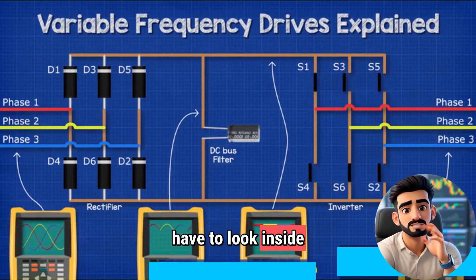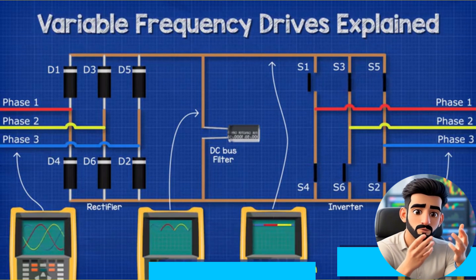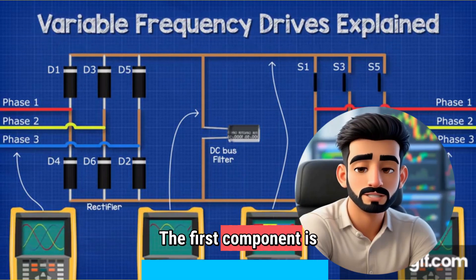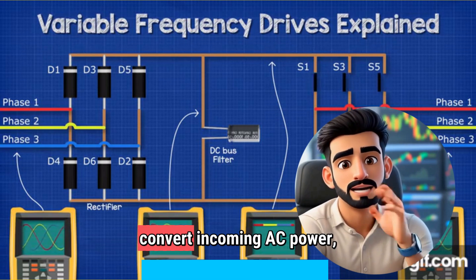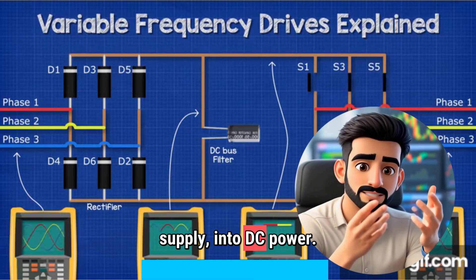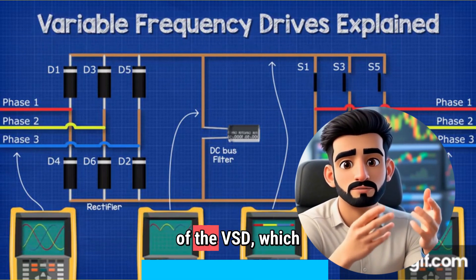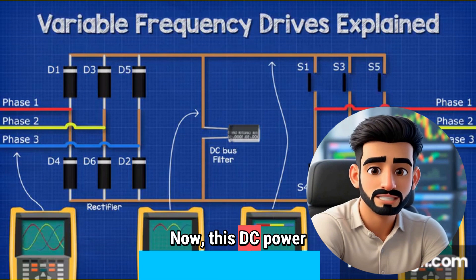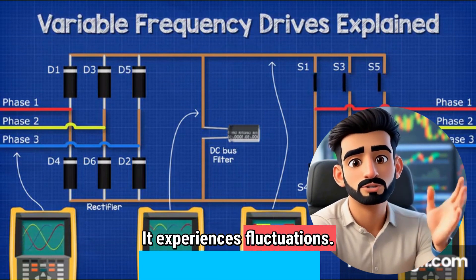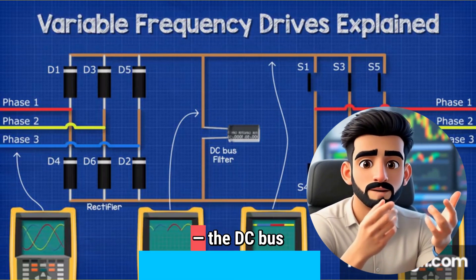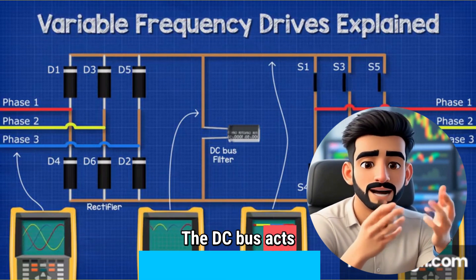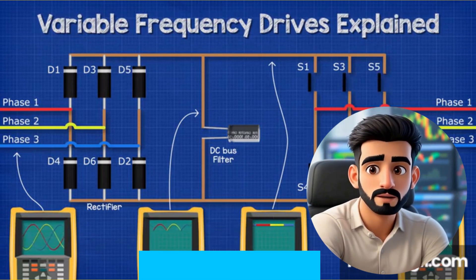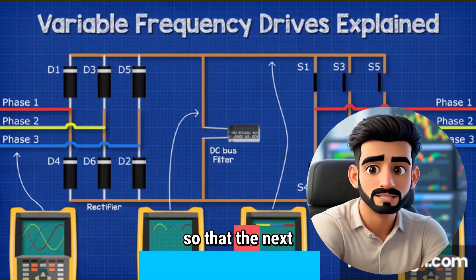A complete setup of a VSD consists of four main components. Understand these well, because they form the foundation of VSD's working. The first component is the rectifier. Its job is to convert incoming AC power — which comes from our supply — into DC power. You can think of it as the gatekeeper of the VSD, which takes AC power and converts it into DC. Now this DC power that is generated is somewhat unstable; it experiences fluctuations. Here, the role of another component comes in: the DC bus, or DC link. The DC bus acts like a reservoir — it stores the rectified DC power and filters it to produce a completely smooth and stable DC voltage, preparing a steady supply so that the next stage can operate properly.